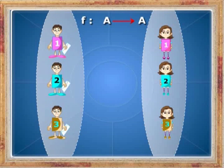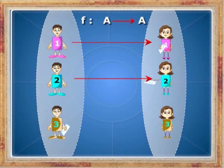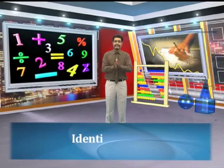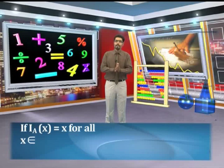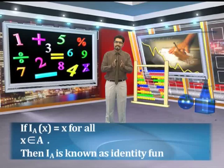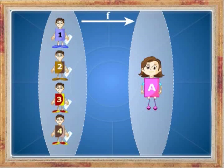If the image of an element is the same as the element itself, then this type of function is known as an identity function. For example, f of 1 equals 1, f of 2 equals 2, and so on. Identity function: if I subscript A of x equals x for all x belonging to A, then I subscript A is known as the identity function on A.